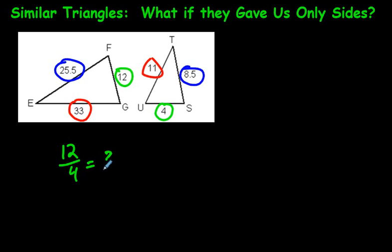All we have to do now is just take 12 divided by 4, that's 3. Let's do the red ones. 33 divided by 11 is also 3. So far this is looking good, but we can't be sure until we're done.